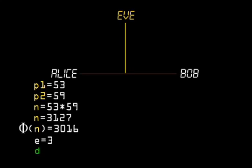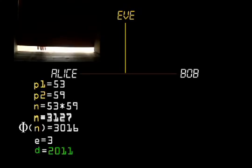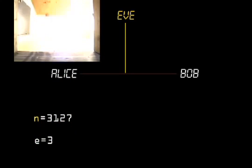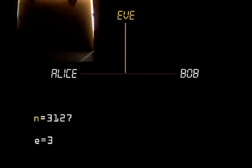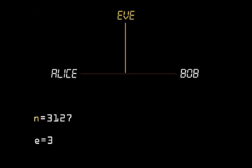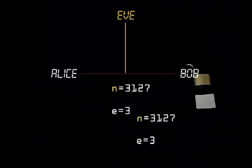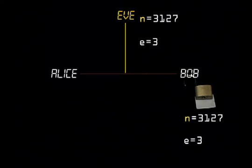Finally, she finds the value of her private exponent d, which in this case is 2 times phi of n plus 1 divided by 3, or 2,011. Now, she hides everything except the value of n and e, because n and e make up her public key. Think of it as an open lock. She sends this to Bob to lock his message with.